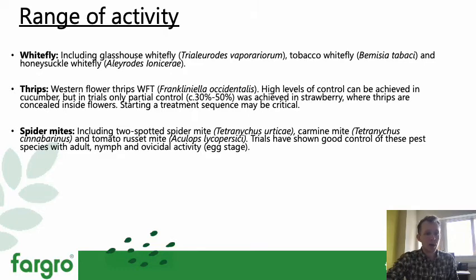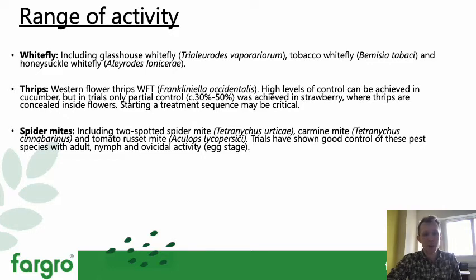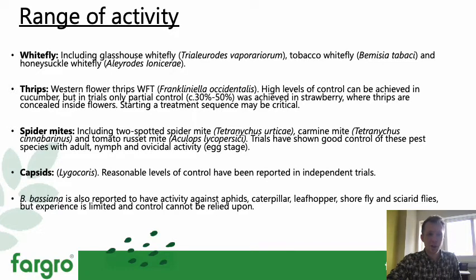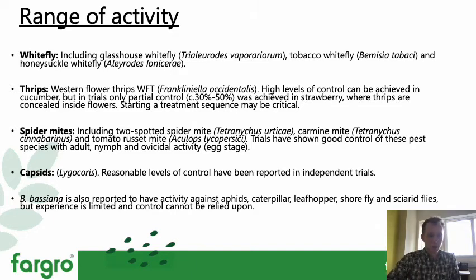For spider mites, Naturalis and Beauveria bassiana have good activity across a range of different spider mite species and across a range of different life cycle stages — adults, nymphs, and some ovicidal activity. Contact is absolutely key with this product on all of these pests. Some independent trials have shown pretty good control of capsids, and there's good data showing efficacy on aphids, caterpillars, leafhoppers, and a whole range of soft-bodied pests. We at Fargo have seen really good control in the correct environmental conditions of aphids, seeing it rip through populations.